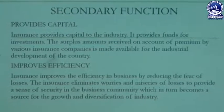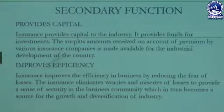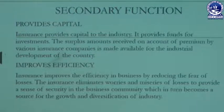Moving to secondary functions — the first is that insurance provides capital to industry. The surplus amounts received as premium by insurance companies are made available for the industrial development of the country. For example, if a company collects one crore rupees as premium and pays out fifty lakh rupees in compensation, the remaining fifty lakh rupees is invested in capital investments or government projects. This is how insurance companies grow and cover their own expenses.